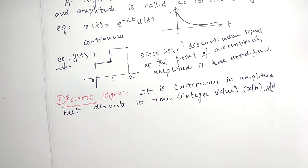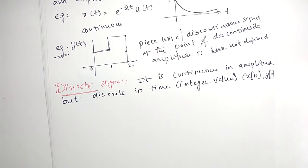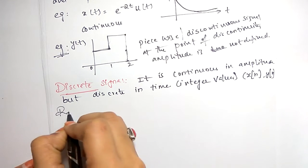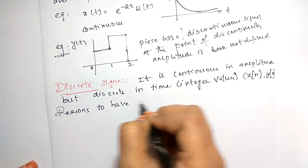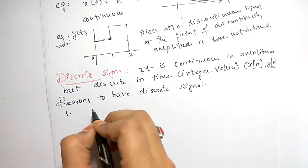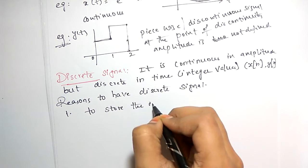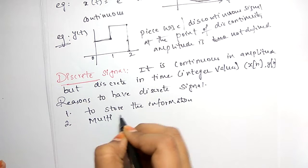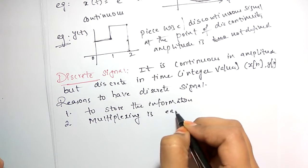Why do we need a discrete signal? We need a discrete signal to store information — continuous signals must be transformed into discrete signals for storage. Also, multiplexing is easier with discrete signals. So the two main reasons to have discrete signals are: first, to store information, and second, multiplexing is easy.